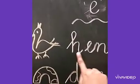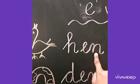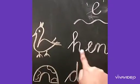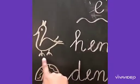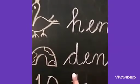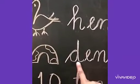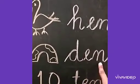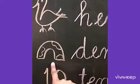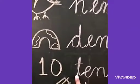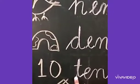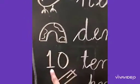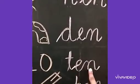Now come to the first word: H-E-N, hen. H-E-N, hen. Next word is D-E-N, den. D-E-N, den.